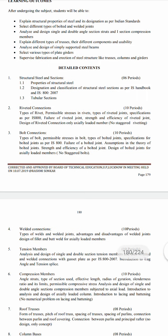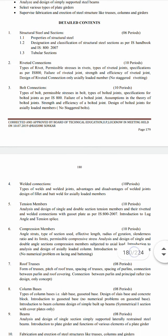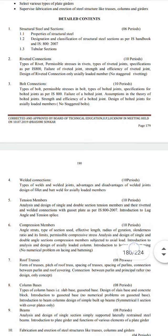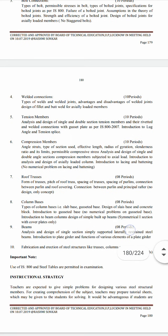The third chapter is bolted connections: types of bolts, permissible stress in bolts, types of bolt joints, specifications for bolted joints as per IS 800, failure of bolted joints, assumptions in the theory of bolted joints, strength and efficiency of bolted joints, and design of bolted joints for axially loaded members — no staggered bolts.